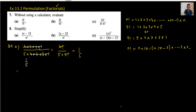Moving to Part B: we have 8 factorial in the numerator. So we write 8 times 7 times 6 factorial, and since the denominator has 6 factorial it cancels out. The answer is 56, and we are done.